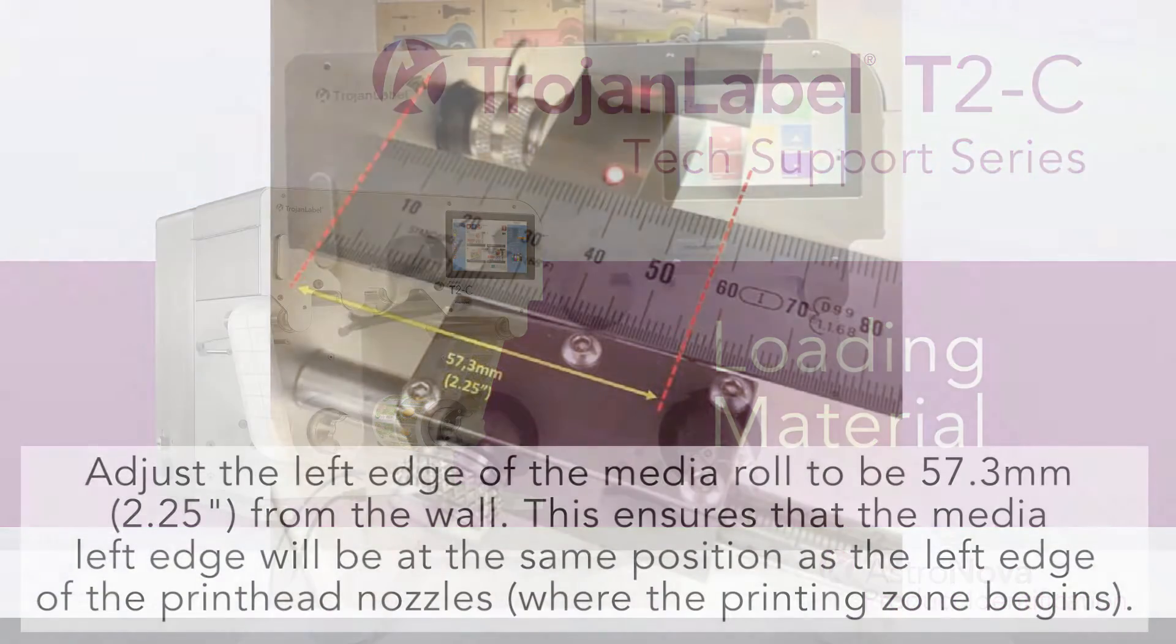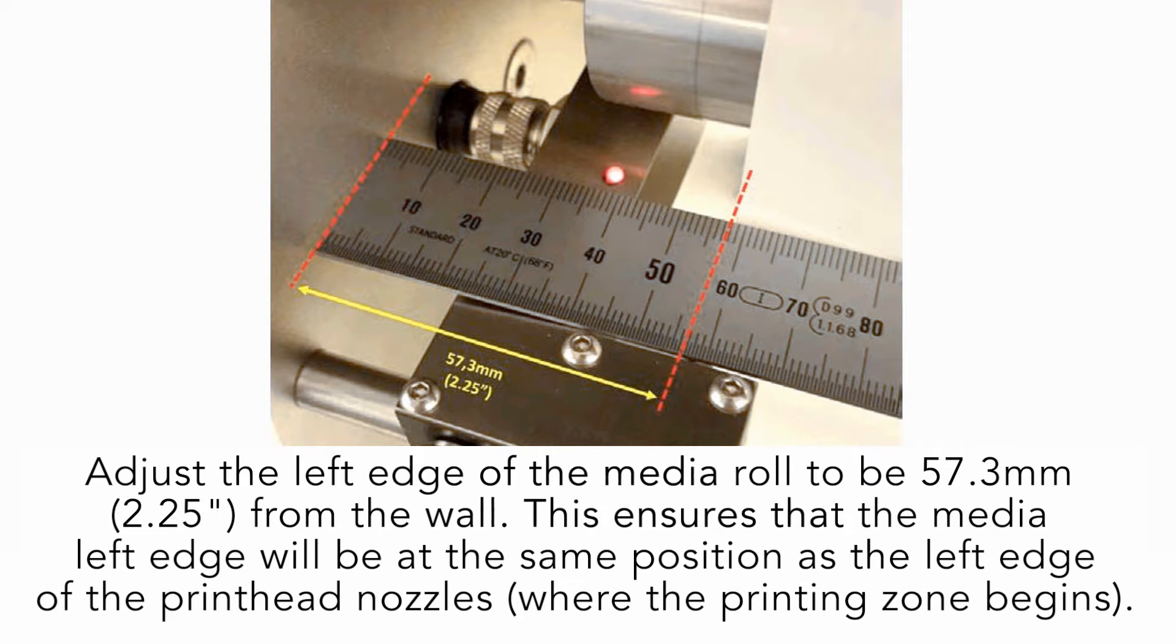Before you load your new material into the T2C, adjust the left edge of the media roll to be 57.3 millimeters from the wall. This ensures that the media left edge will be at the same position as the left edge of the printhead nozzles.